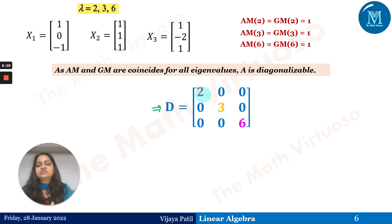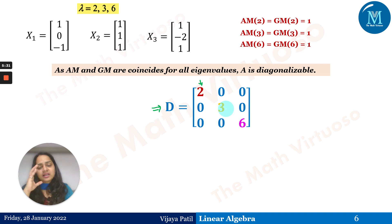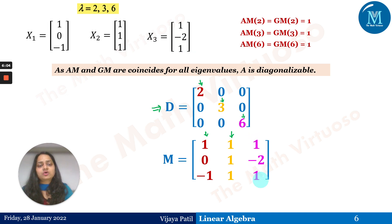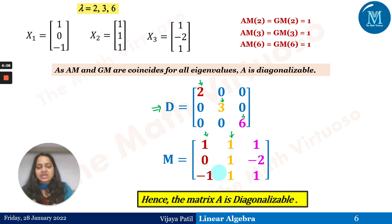Please follow the color code used throughout. The first column of D is filled with eigenvalue 2, so correspondingly the first column of modal matrix M is filled with the eigenvector for λ = 2, which is [1, 0, −1]. The second column of D has 3, so x₂ = [1, 1, 1] goes in the second column of M. For 6 in the third column, x₃ = [1, −2, 1] is placed in the third column of M. So A is diagonalizable — D is the diagonal matrix.